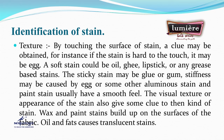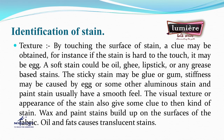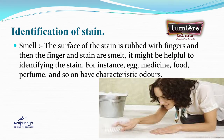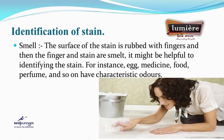Yellow stains may be caused by turmeric, medicine, gravy, or mangoes. Blue or black marks may be ink stains. By touching the surface of a stain, a clue may be obtained — a hard stain may be wax, a soft stain could be oil, lipstick, or grease-based, and sticky stains may be glue or gum. Stiffness may be caused by egg or albumin. If the stain is rubbed and smelled, it might help identify it, as egg, medicine, food, and perfume have characteristic odors.